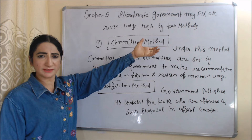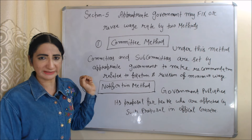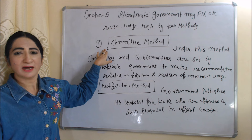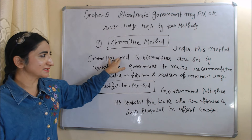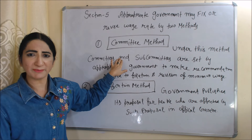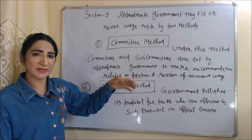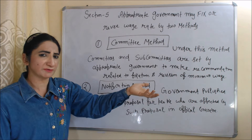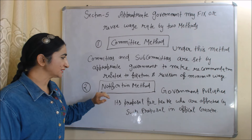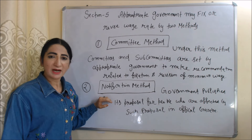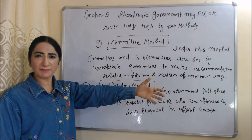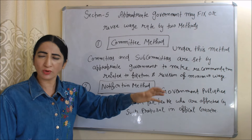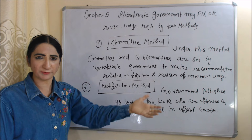According to Section 5, the appropriate government may fix or revise the minimum wage rate by two methods. The first is the committee method, under which committees and subcommittees are set up by the appropriate government to make recommendations related to the fixation and revision of wage rates. The second is the notification method, under which the government publishes its proposals for affected people in the official gazette.